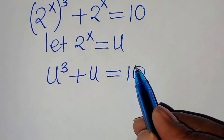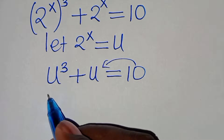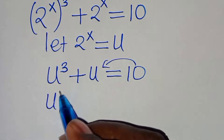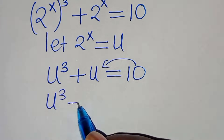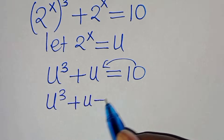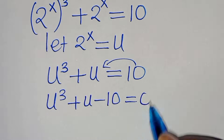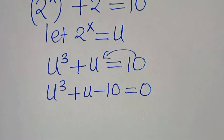Now let's take 10 to the left-hand side, so that we have u to the power of 3 plus u minus 10, and this is equal to 0.